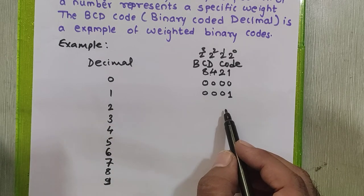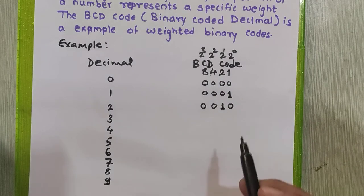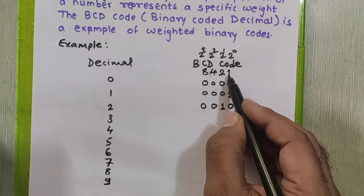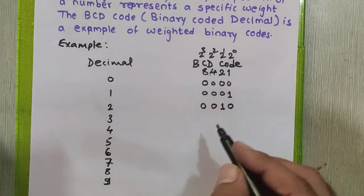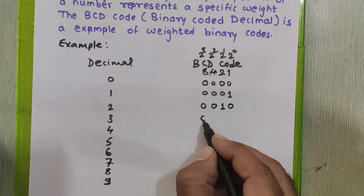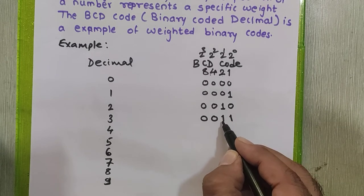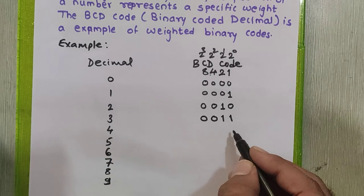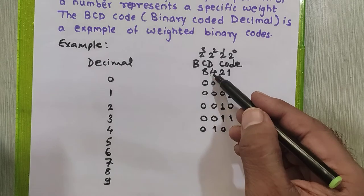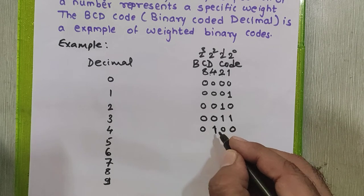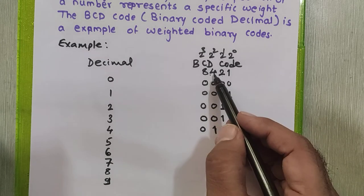Now how do you represent 2 in the 4-bit BCD number? 2 is 0010 — the second bit is 1 and others are 0. How do you represent 3? 3 is obtained by adding 2 plus 1, so the last two digits must be 1. To represent 3 in BCD it is 0011 — this 1 is 2, this 1 is 1, and 2 plus 1 is 3. How do you represent 4? It is 0100.